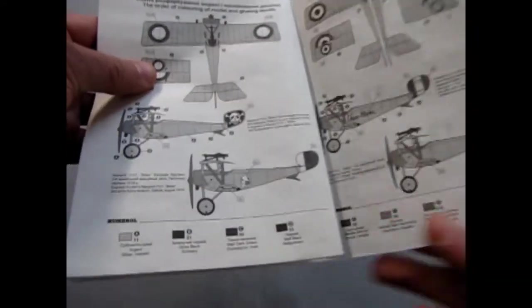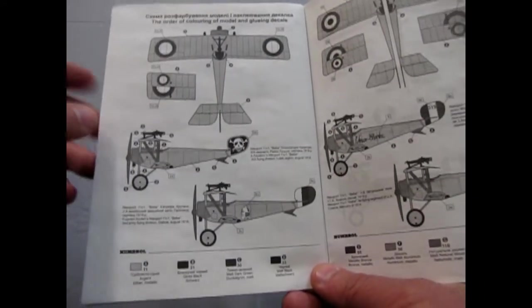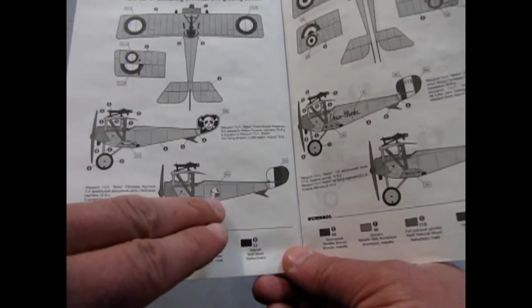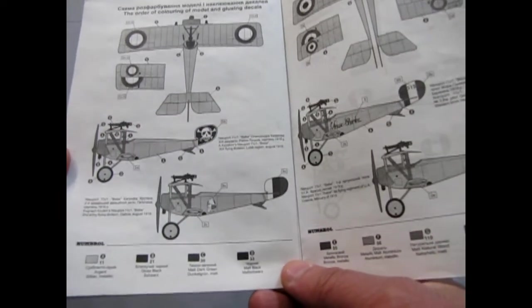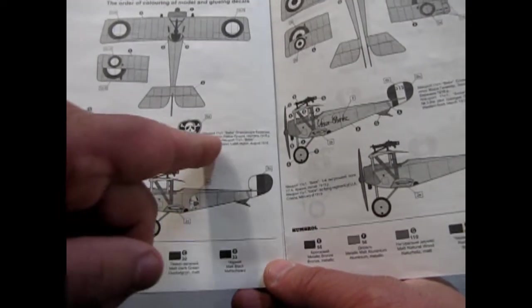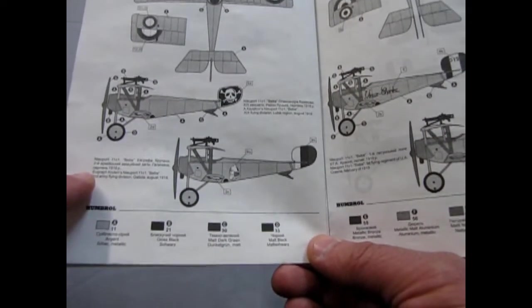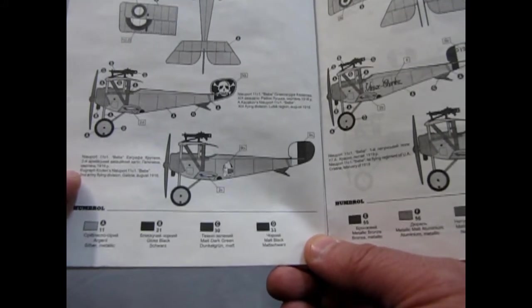And here are the paint schemes and call-outs for the Russian Ace. There's actually two Russian Aces here. There's the one with the knight and the crown, and of course the skull and crossbones. And it tells you which pilot. Alright, that's Kazakov's Newport, and down here is Kruton's Newport.